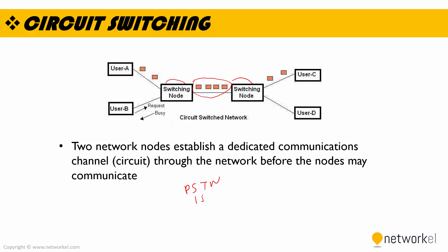Examples of circuit switching technologies include ISDN and PSTN, which stands for Public Switched Telephony Network.